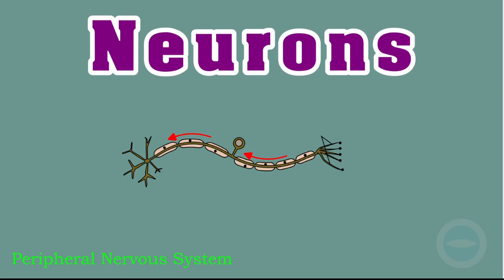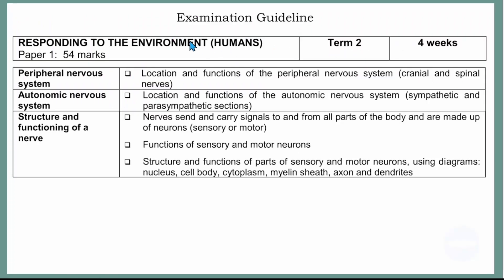Here I have the examination guideline. This guideline is for life sciences and we will be looking at the Peripheral Nervous System — its location and functions — and the Autonomic Nervous System, also its location and functions. I will also show the structure and functioning of the nerves, including the sensory neuron and the motor neuron. So this is the content of this video.